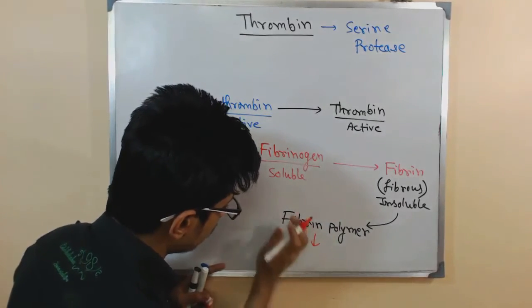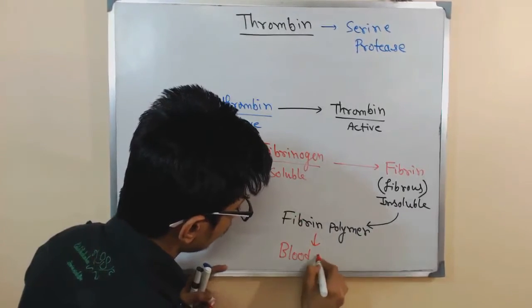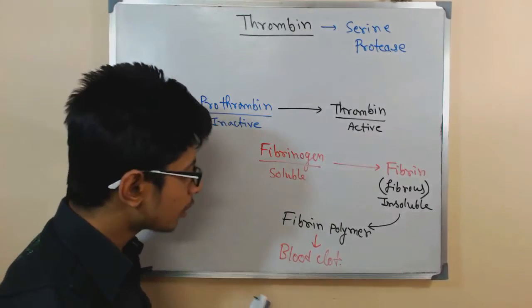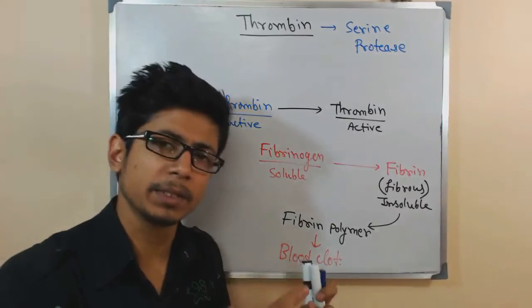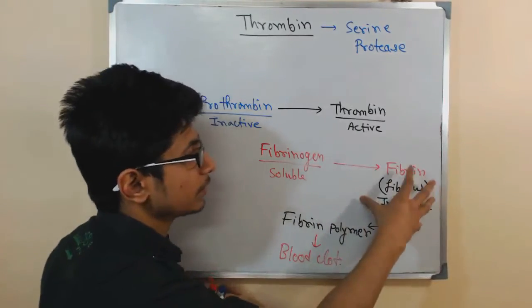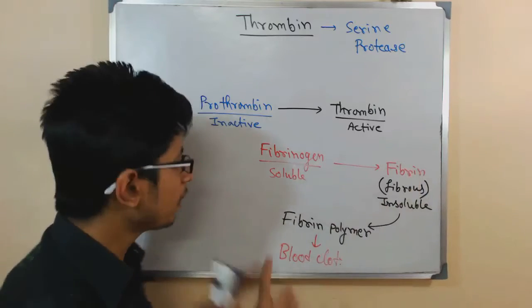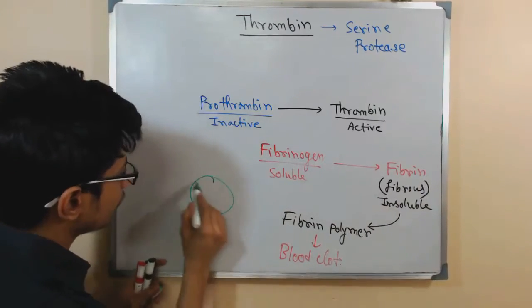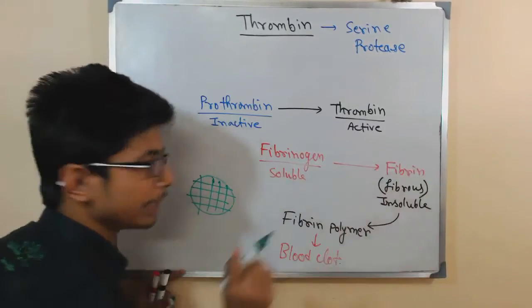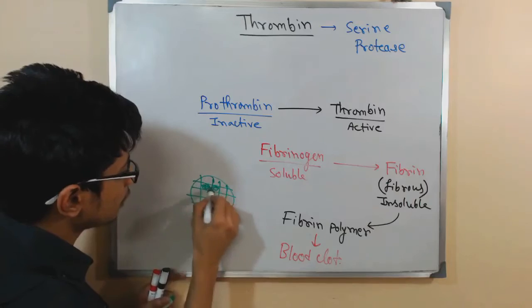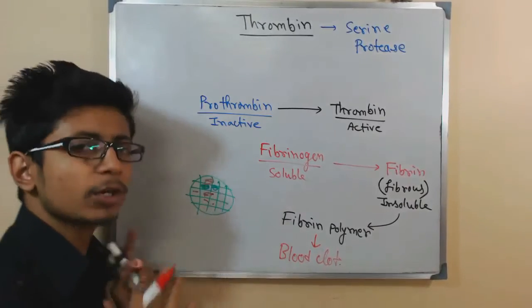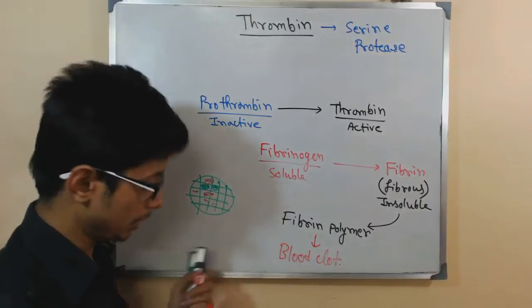Once the fibrin polymer is formed, it ultimately causes blood clotting — it forms the blood clot at the end. The clotting also involves red blood cells and other cells, which is why you see a red plug form. If you have a cut, the matrix structure is first provided by fibrin, and then other clotting factors, red blood cells, cell debris, and tissue debris arrange there to clot the region.